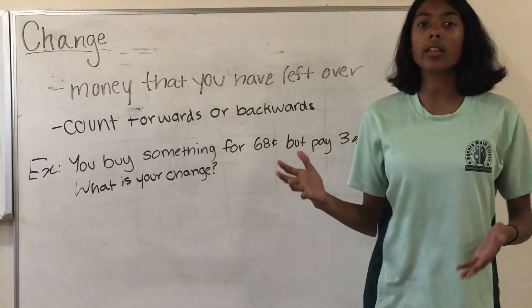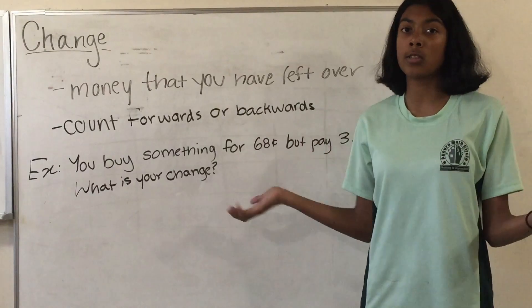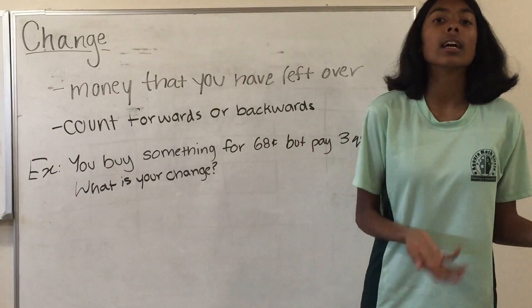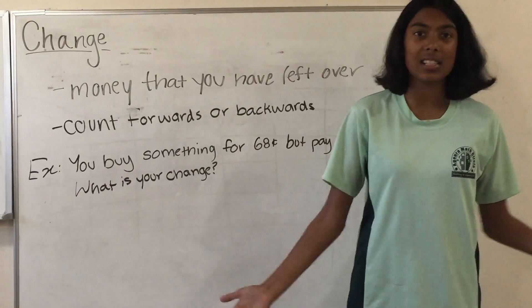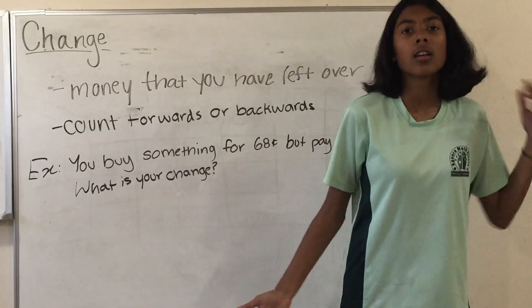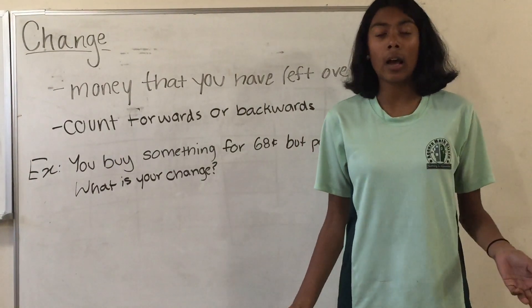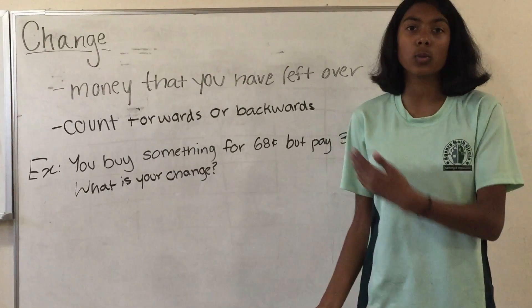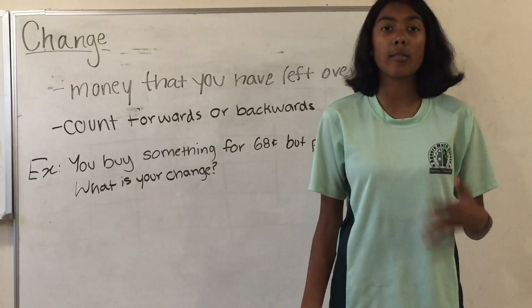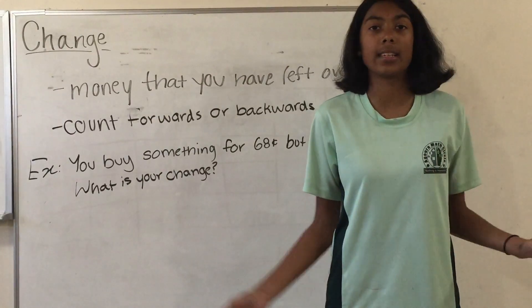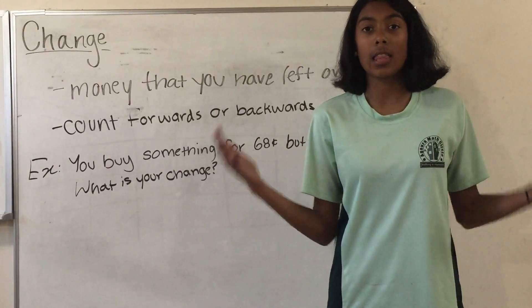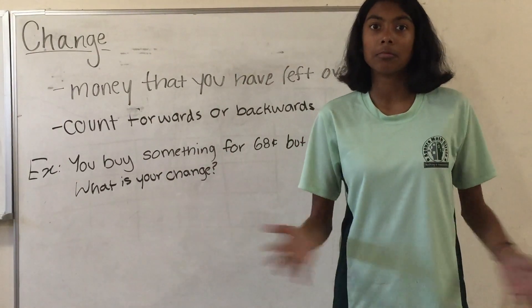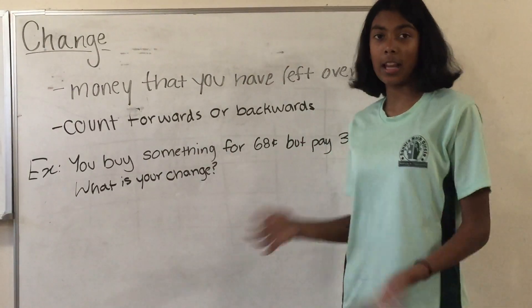Now let's try the counting backward technique, which is basically subtraction. We just do 75 minus 68, and that's 7. And there you go.